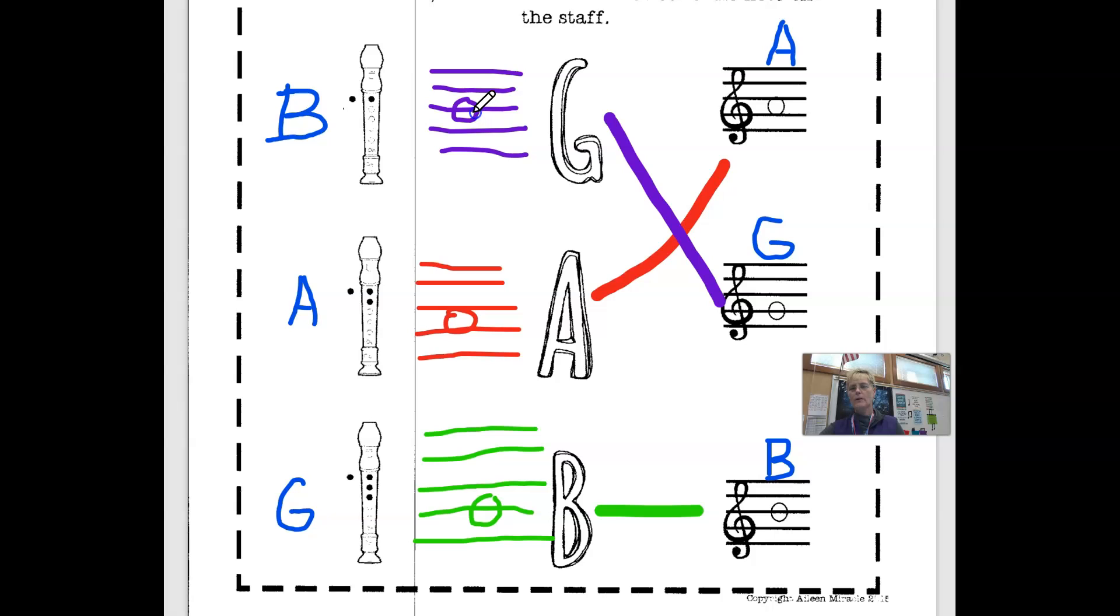To remember a B, or just write down the B is always in the middle, like that. Or you can write down an A as a second space, and a B as a second line. Okay, so work on those, B, A, and G.